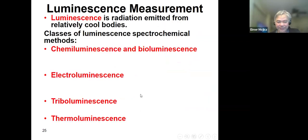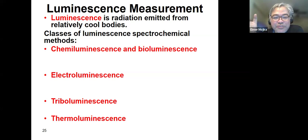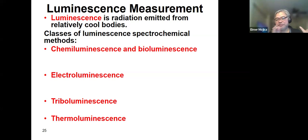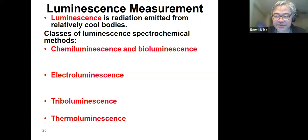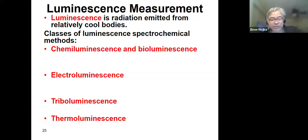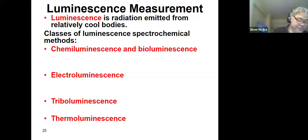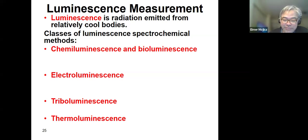The next one is luminescence — the radiation emitted from relatively cool bodies. The difference between emission and luminescence: for emission, you need energy for it to emit radiation; but for luminescence, the radiation emits on its own. You can have different classifications: chemiluminescence and bioluminescence are produced by chemical or biological reactions.